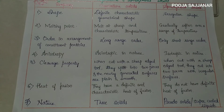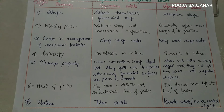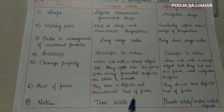The sixth property is heat of fusion. Heat of fusion is the energy needed for one gram of solid to melt without any change in temperature. In the case of crystalline solids, the heat of fusion value will be definite and characteristic. But amorphous solids don't have any definite heat of fusion.